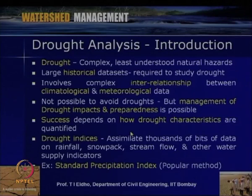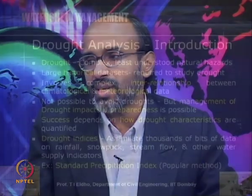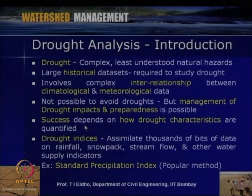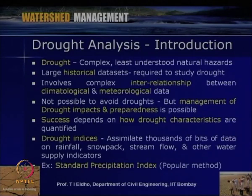We have to understand the various aspects of drought — whether meteorological, hydrological, or other types — to understand the starting, intensity, and duration. The success of drought analysis depends on how drought characteristics are quantified. Drought analysis means understanding and quantifying the characteristics of droughts in terms of numbers or indices. Drought indices are commonly used as a tool to analyze drought.